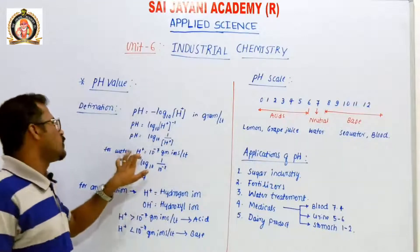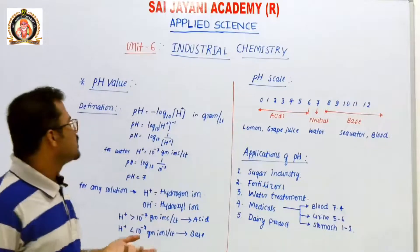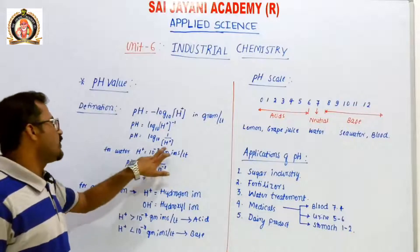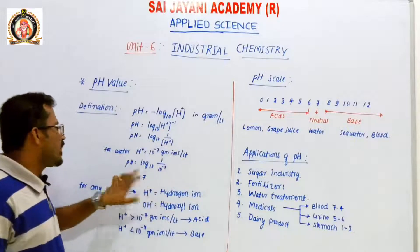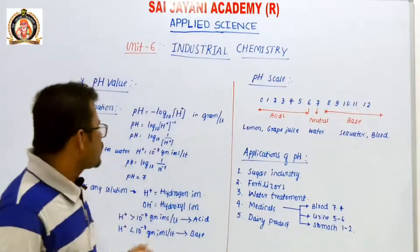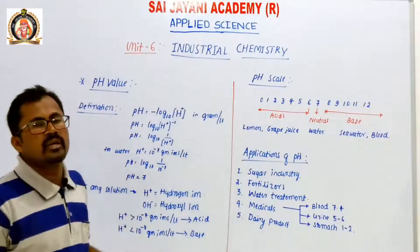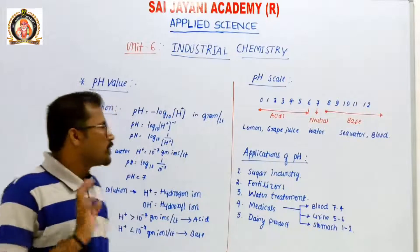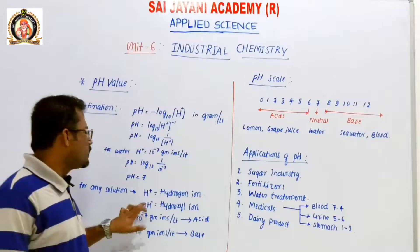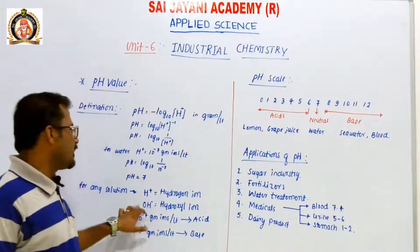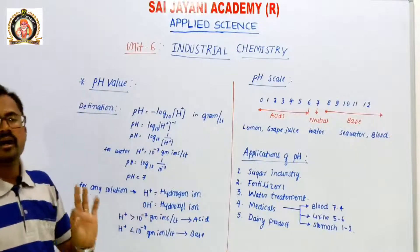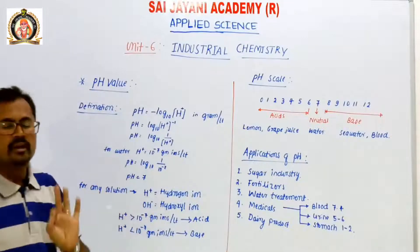For water, the hydrogen ions present are 10 to the power minus 7 gram ions per liter. So the pH value of water is 7. A pH value of 7 means the solution is neutral — neutral means the hydrogen ion H⁺ is equal to the hydroxyl ion OH⁻. If hydrogen ions and hydroxyl ions are equal, the solution is known as neutral.